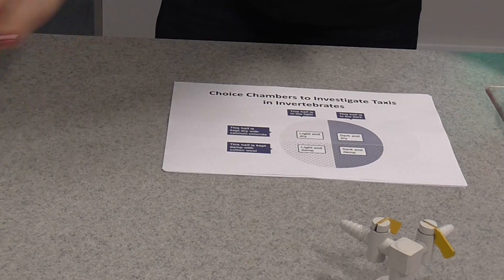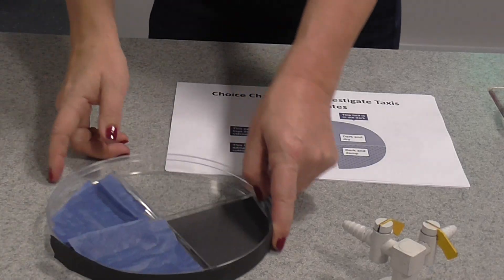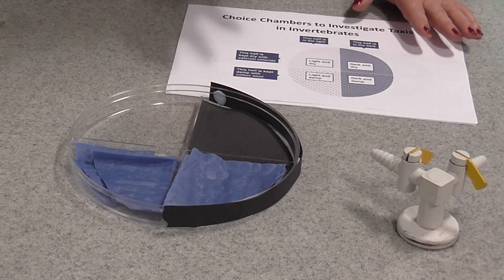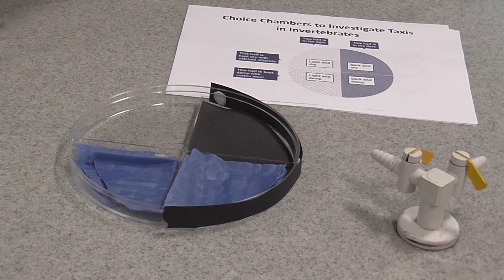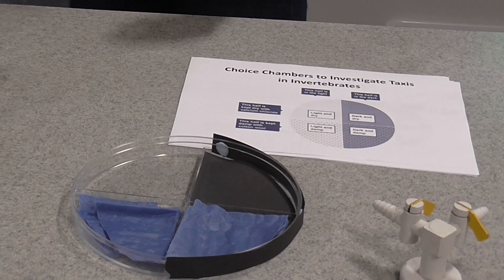Now here's a choice chamber that I've prepared earlier. What I've done, you can see I've set it up in this way. I've got half of it that's going to be in the dark and I've done the same with the lid by putting a piece of black paper in there. The lid will go on there.